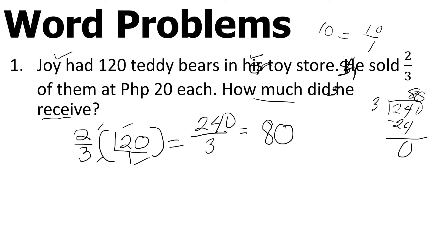Wait, when you look at the choices, why is there no 80? Look at the question: How much did she receive? We're not asked how many teddy bears were sold, but how much money. Since each is 20 pesos, multiply 80 by 20. She received 1,600 pesos. Reading comprehension is really needed.